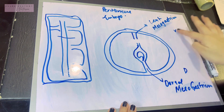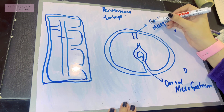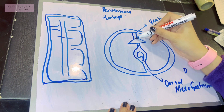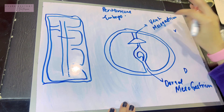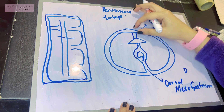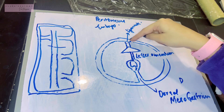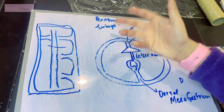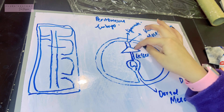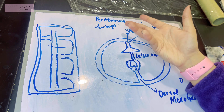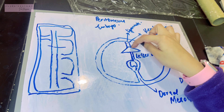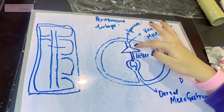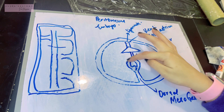As the embryo grows, another organ — the liver — starts to develop within the ventral mesogastrium. Since the liver develops there, it divides the ventral mesogastrium into a ventral part and a dorsal part. The ventral part, which is anterior to the liver, becomes the ligaments of the liver, such as the falciform ligament and the triangular ligament, since a peritoneal fold connecting an organ to the abdominal wall is called a ligament.